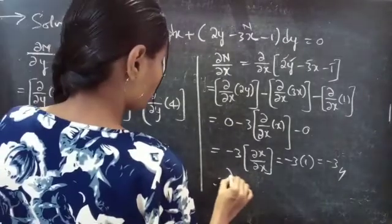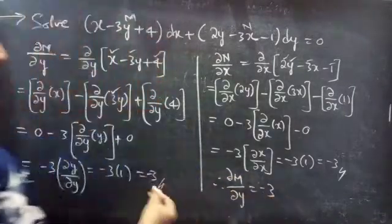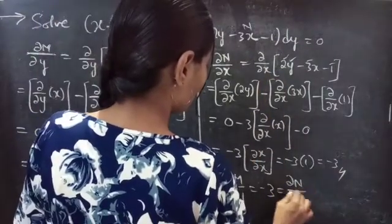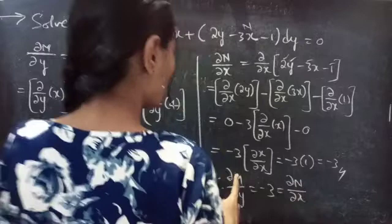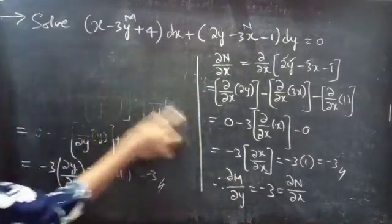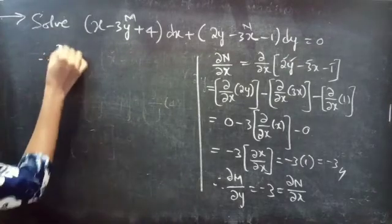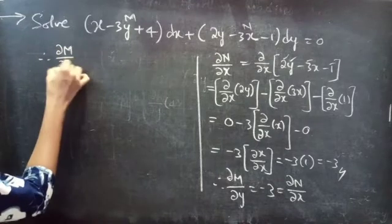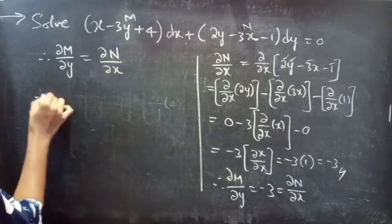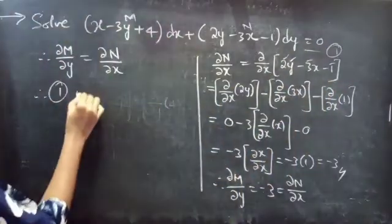Therefore, ∂M/∂y equals minus 3 and also ∂N/∂x equals minus 3. Therefore, the partial derivative of M with respect to y is equal to the partial derivative of N with respect to x. So from this we can say that the given differential equation, equation 1, is an exact equation.